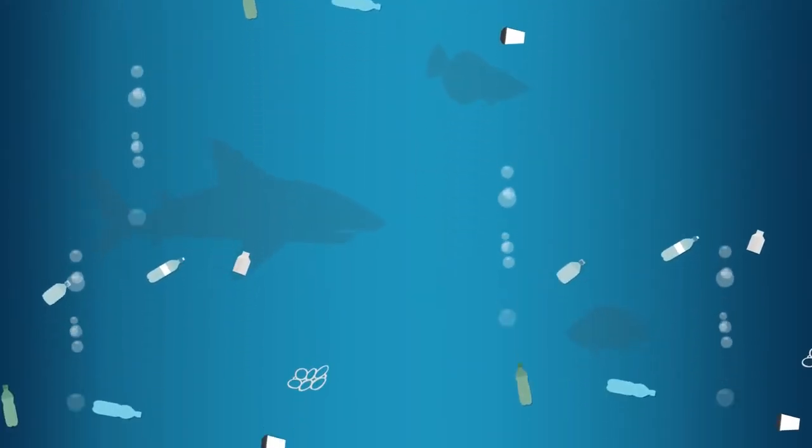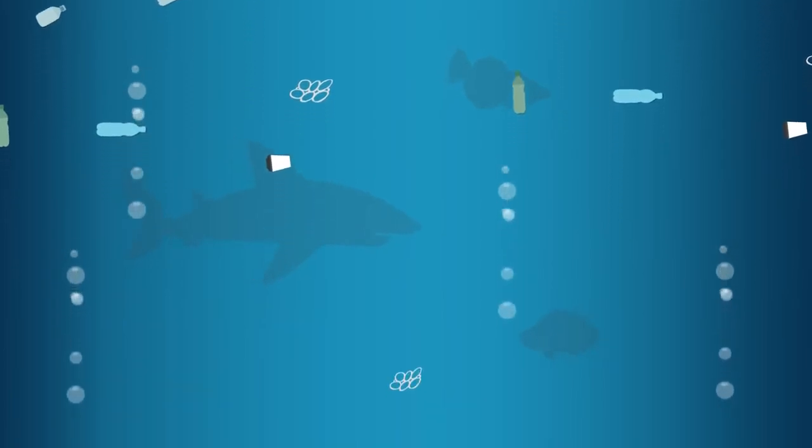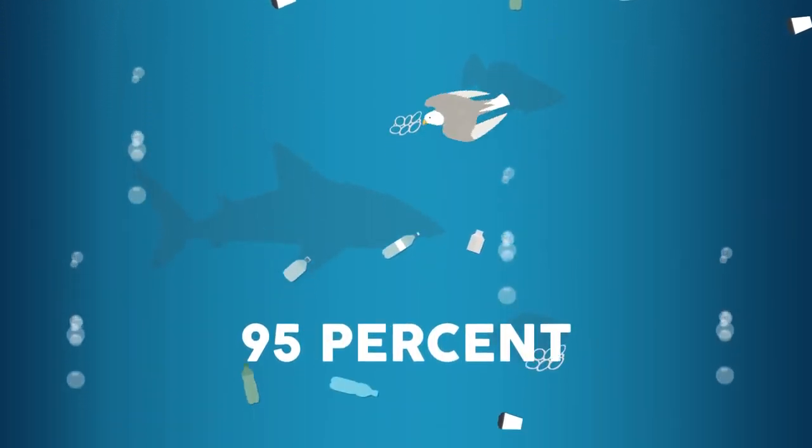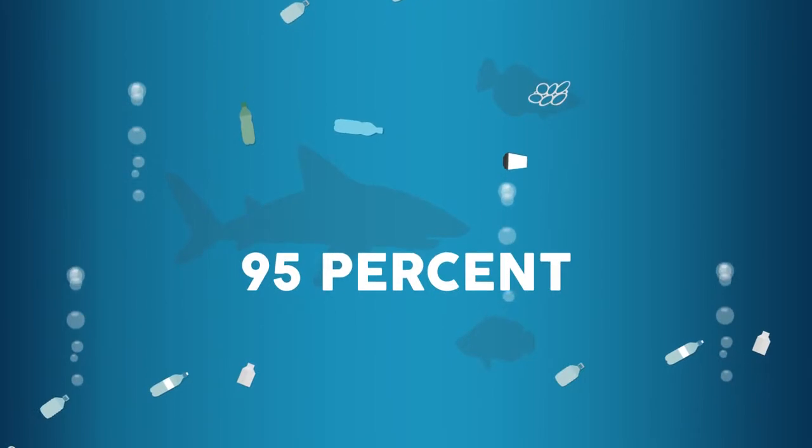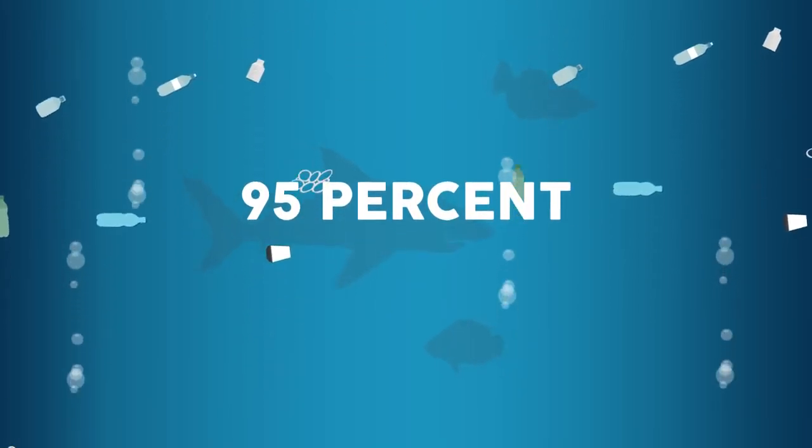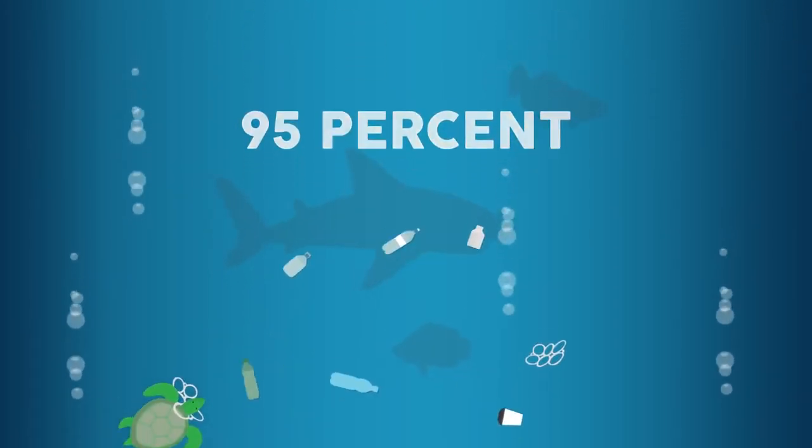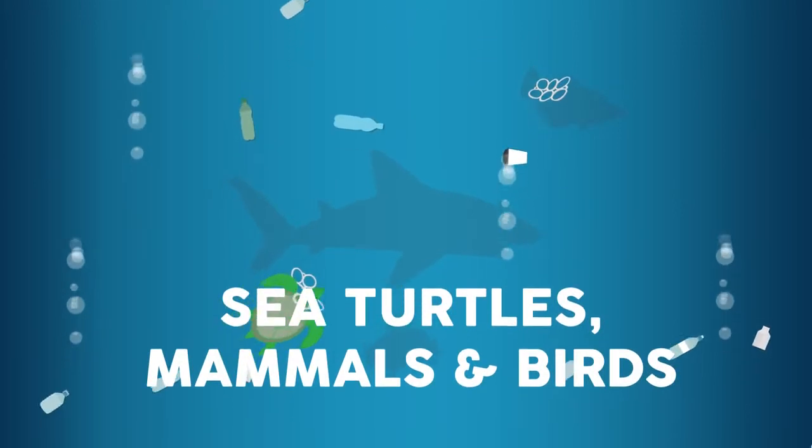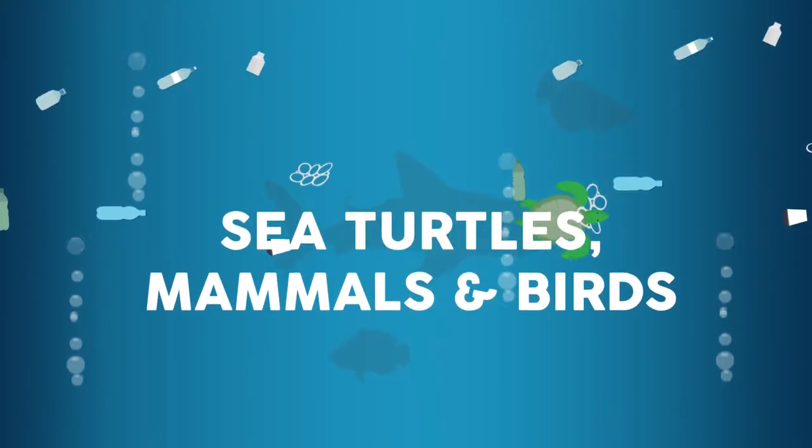Every year, thousands of marine species fall victim to our trash. 95 percent of northern fulmars found washed up dead in the North Sea had ingested plastic debris. All seven sea turtle species, over half of marine mammal species, and almost two-thirds of all seabird species have been injured or killed by our trash.